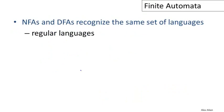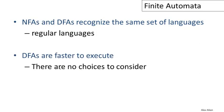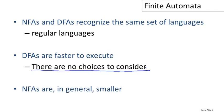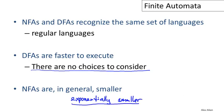NFAs and DFAs recognize exactly the same languages — in particular, the regular languages. So NFAs, DFAs, and regular expressions all have equivalent power and can only specify regular languages. DFAs are faster to execute because there are no choices to consider — a DFA follows a single path through the state graph. With an NFA we must track the set of possible states. However, NFAs can be exponentially smaller than the smallest equivalent DFA for the same language. So there is a space-time trade-off: NFAs may be more compact, but DFAs will be faster to execute.